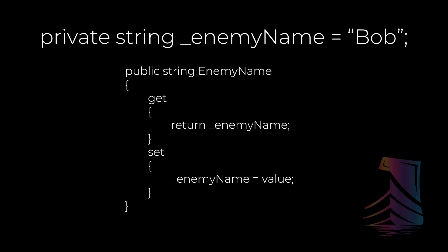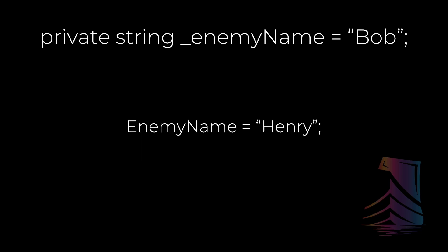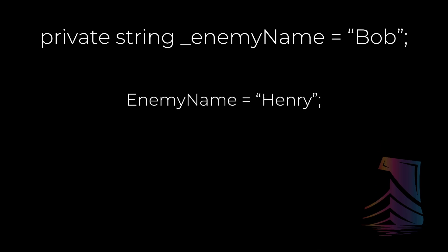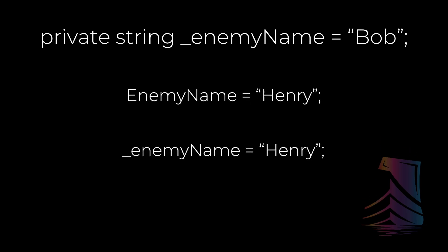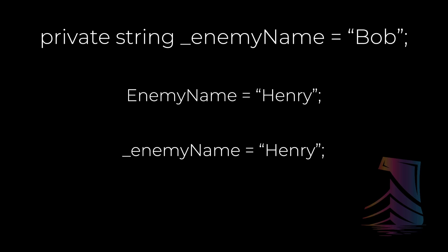Get simply returns the value, a pattern we should be used to by now. Set uses the value keyword, which allows us to do something like this to assign a new value to enemyName, which in turn assigns the value to the underscore enemyName private variable. So that's essentially how properties work as getters and setters.